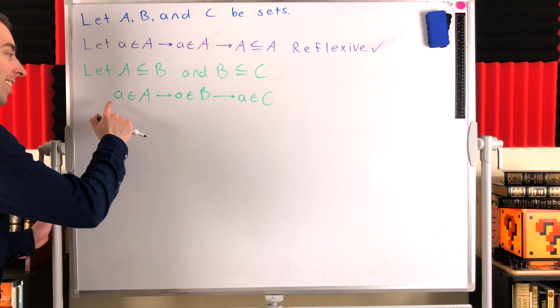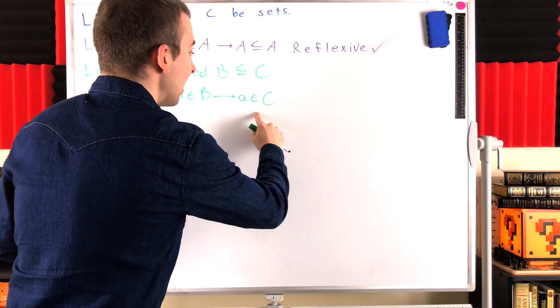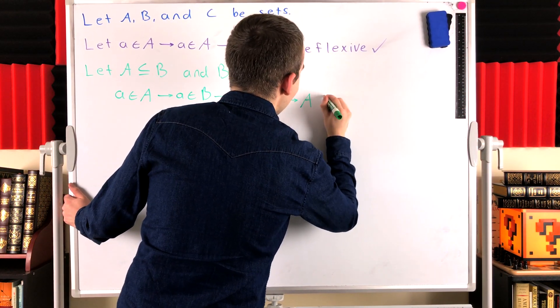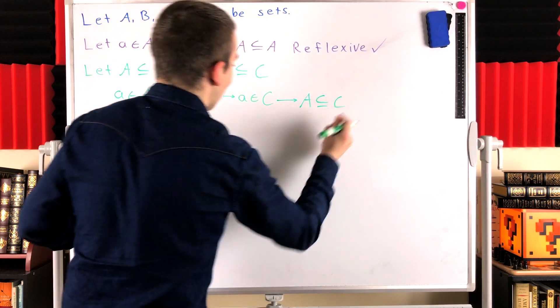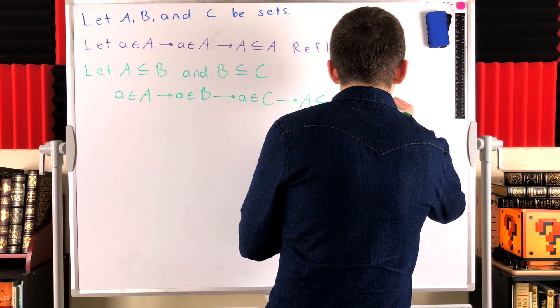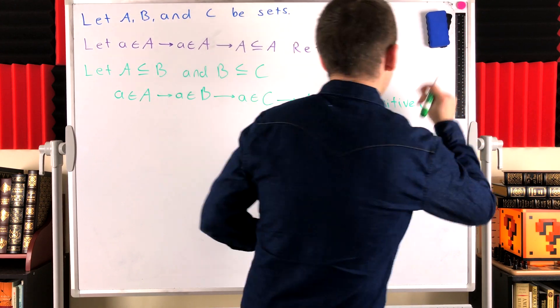This means our element little a also is an element of C. What does that mean? Well, since every element of A is also an element of C, this means by definition of subset, A is a subset of C. Thus, transitivity does hold for the subset relation. The subset relation is transitive. Beautiful.